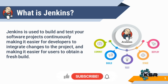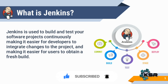When Jenkins came into the picture, it was first open source and completely free. It introduced a continuous integration process to commit the code, build, test, stage, and then deploy. After Jenkins came into the picture, this feasibility has been there where a developer can commit the code whenever and wherever required.